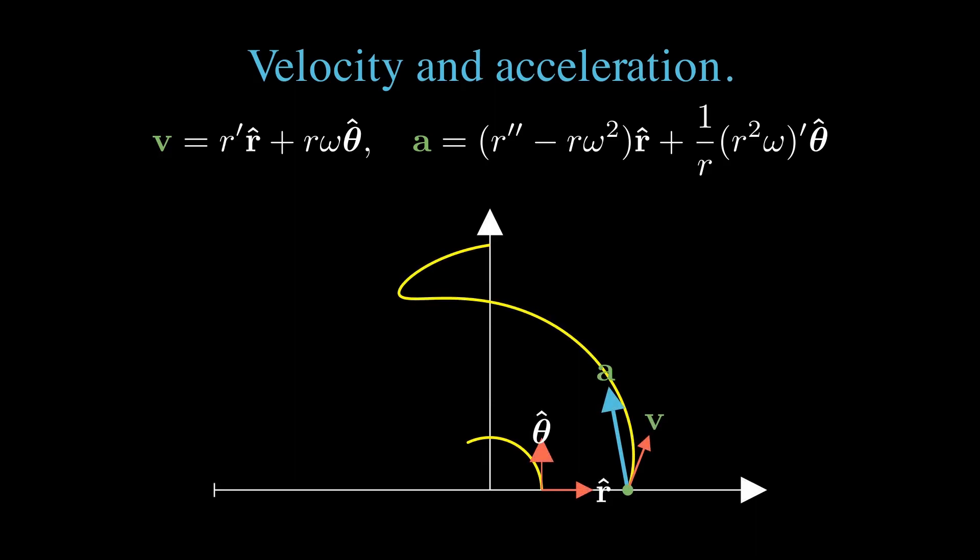Let's look at an example of a vector tracing out all the positions along a continuous curve and the velocity and acceleration at all those points. In general, for an arbitrary parameterized path, both the velocity and the acceleration vectors have r hat and theta hat components.